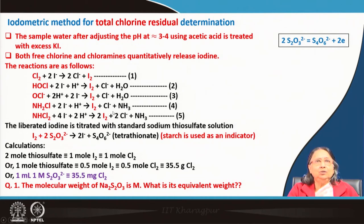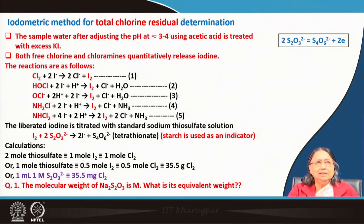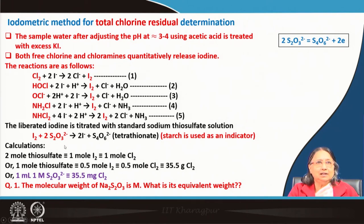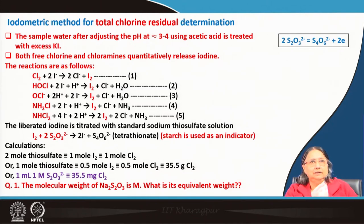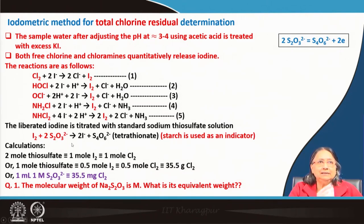To determine the iodine produced quantitatively, we titrate with sodium thiosulfate (Na₂S₂O₃). The balanced equation shows tetrathionate (S₄O₆²⁻) is formed. Starch is the indicator. We take the thiosulfate solution in the burette and the iodine-containing solution in the conical flask, then begin adding thiosulfate.